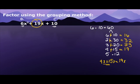So what I do next is I just write out 6x squared. I don't change that. But instead of 19x, I'm going to write 4x plus 15x and then have my plus 10 at the end.